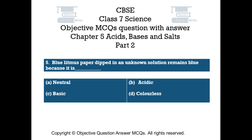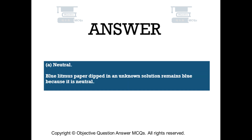Question number 5. Blue litmus paper dipped in an unknown solution remains blue because it is — Option A: neutral. Option B: acidic. Option C: basic. Option D: colorless. The right answer is option A — neutral. Blue litmus paper dipped in an unknown solution remains blue because it is neutral.